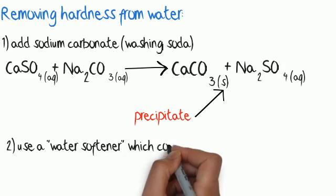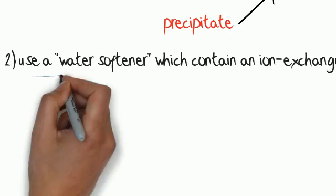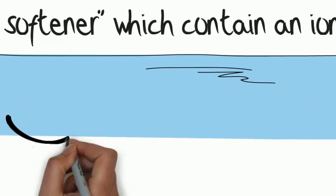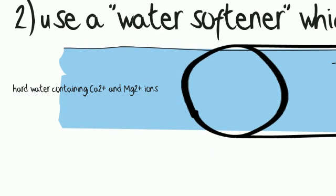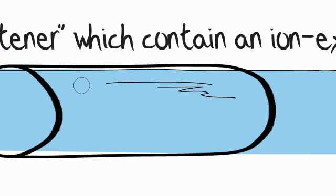You can also use a commercial water softener such as an ion exchange column. These contain hydrogen ions or sodium ions on tiny resin beads. These replace the calcium and magnesium ions when hard water passes through the column. The calcium and magnesium ions are exchanged for sodium or hydrogen ions, and these do not cause hardness in water.